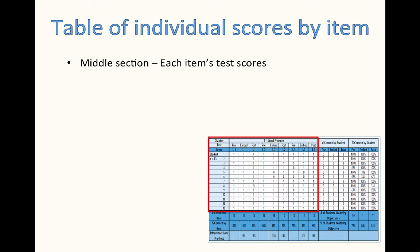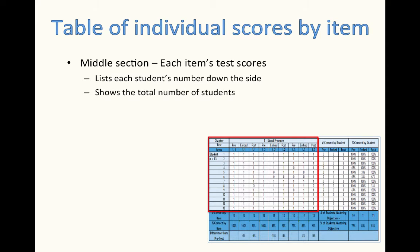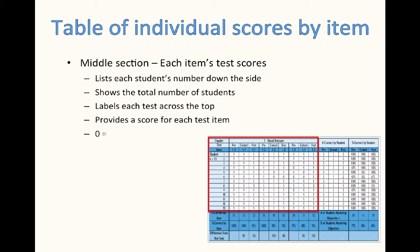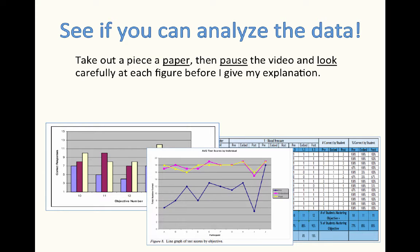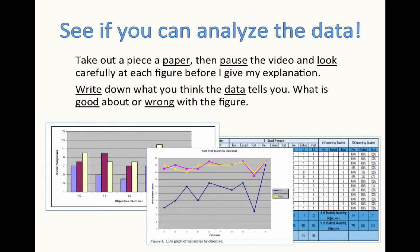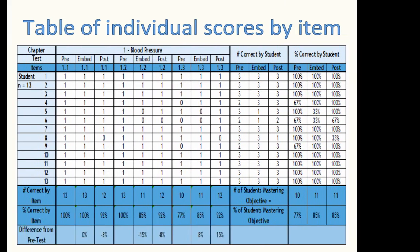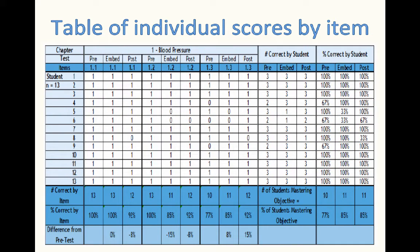The middle section shows each item's test scores. It lists each student's number down the side showing the total number of students, labels each test across the top, and provides a score for each test item. Zero is usually used as incorrect while one is correct. We'll see other versions later. Let's see if you can analyze the data. Take out a piece of paper, then pause the video and look carefully at each figure before I give my explanation. Write down what you think the data tells you. What is good or wrong with the figure? Let's start with our table of individual scores by item.